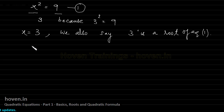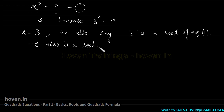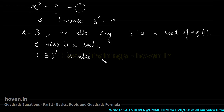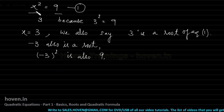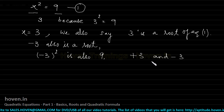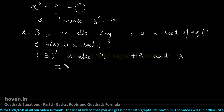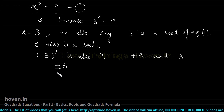You can observe another thing — minus 3 is also a root. We cannot ignore it because (−3)² is also 9. So we say this equation has two roots: +3 and −3. In short form, we write these together as ±3, which represents both numbers.